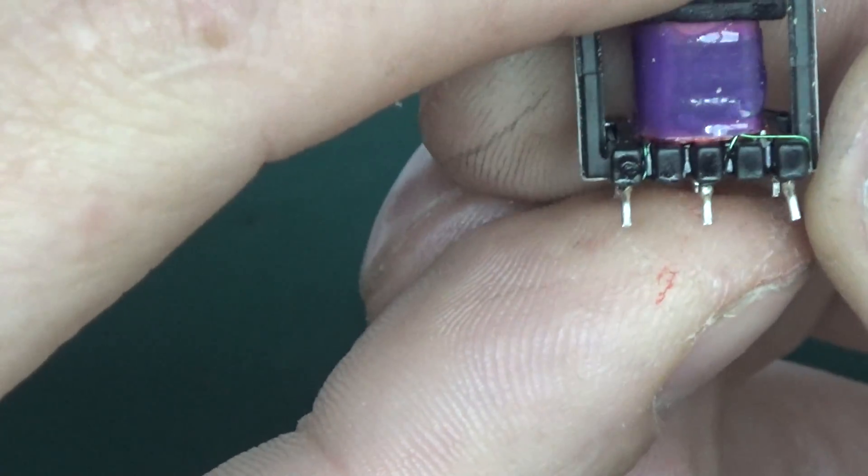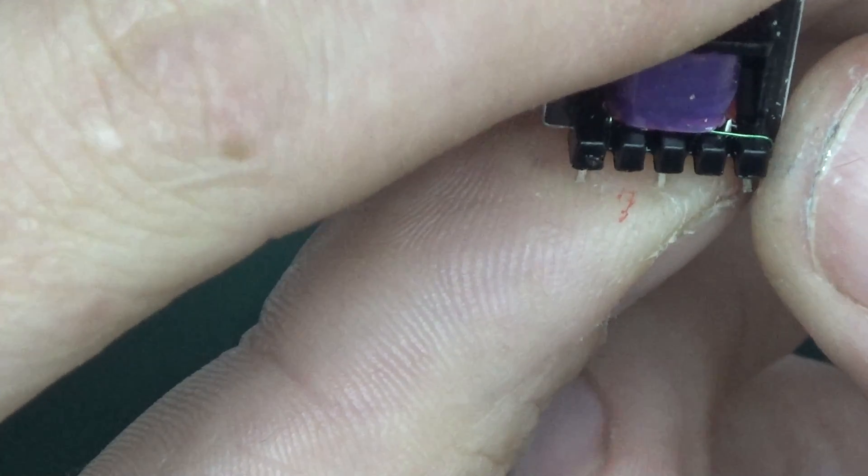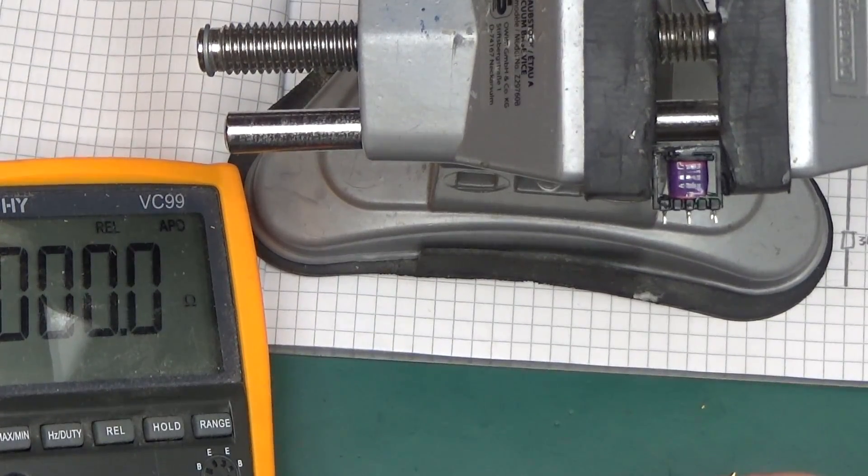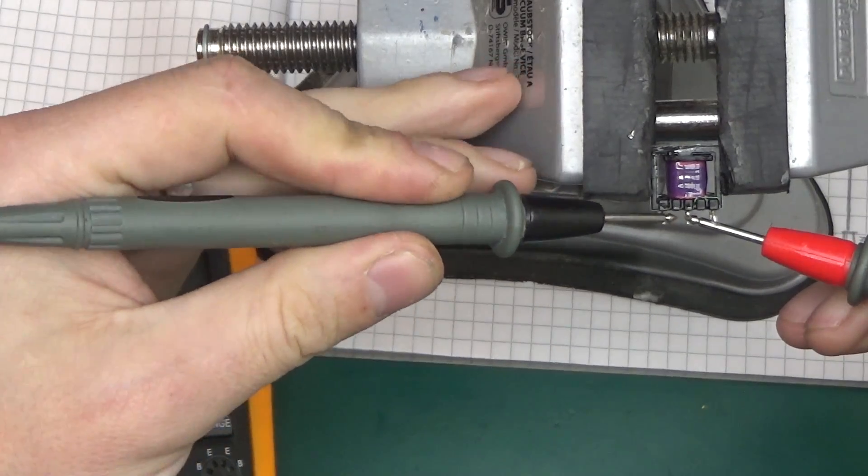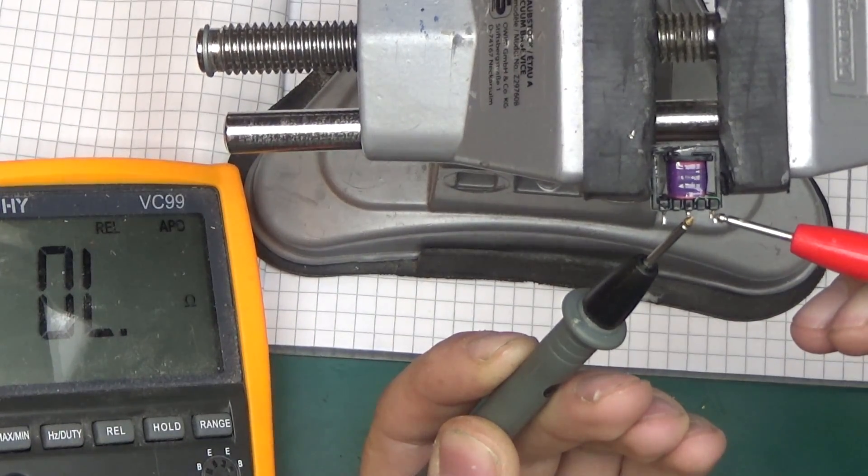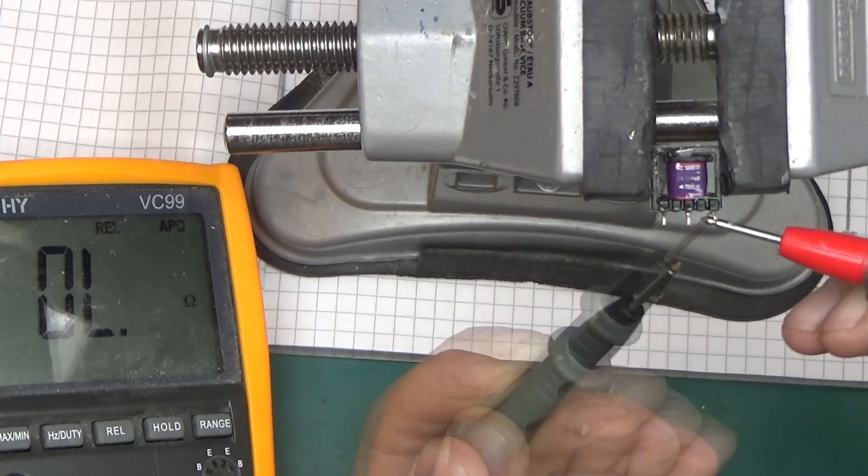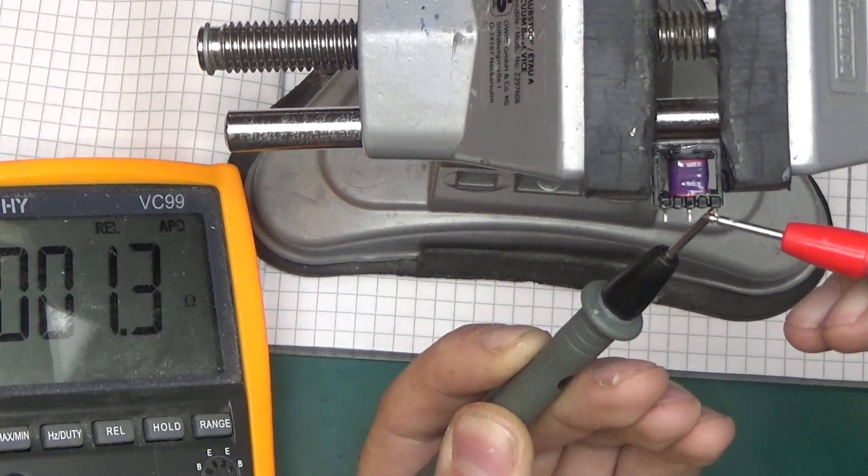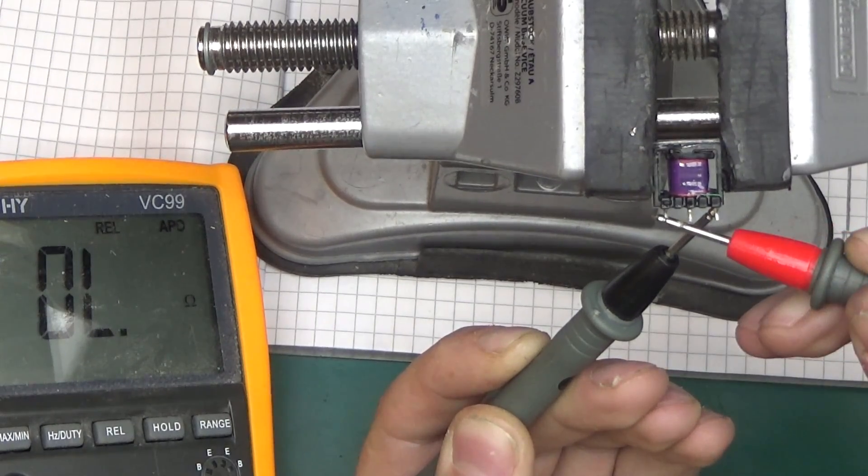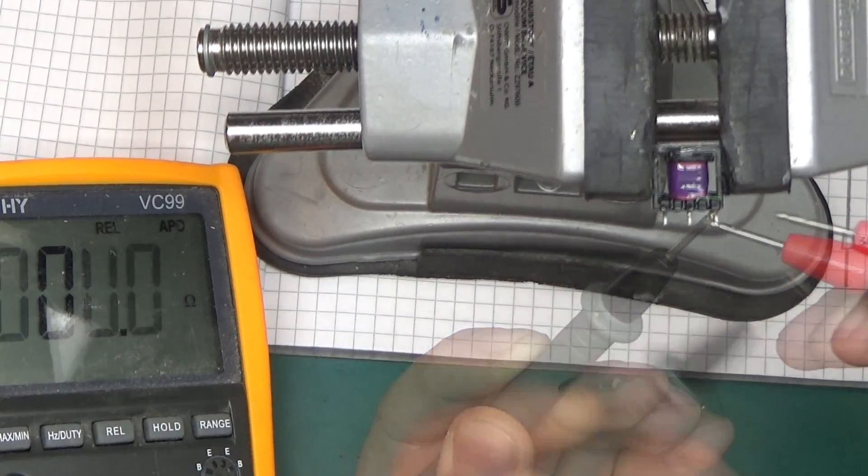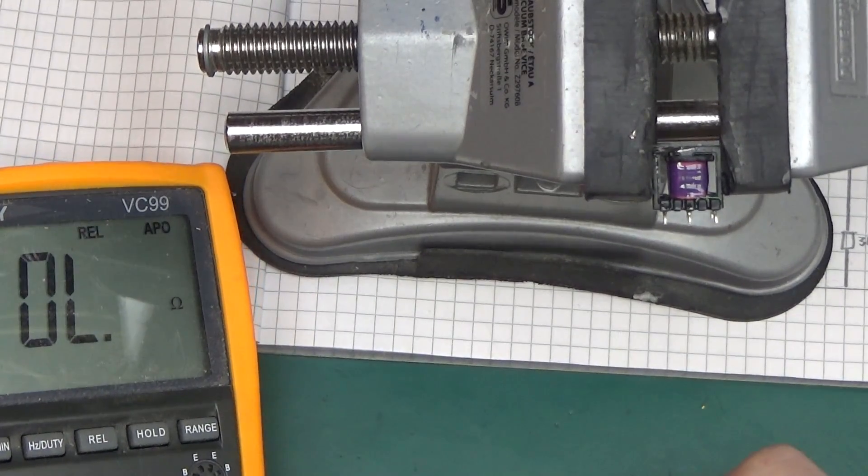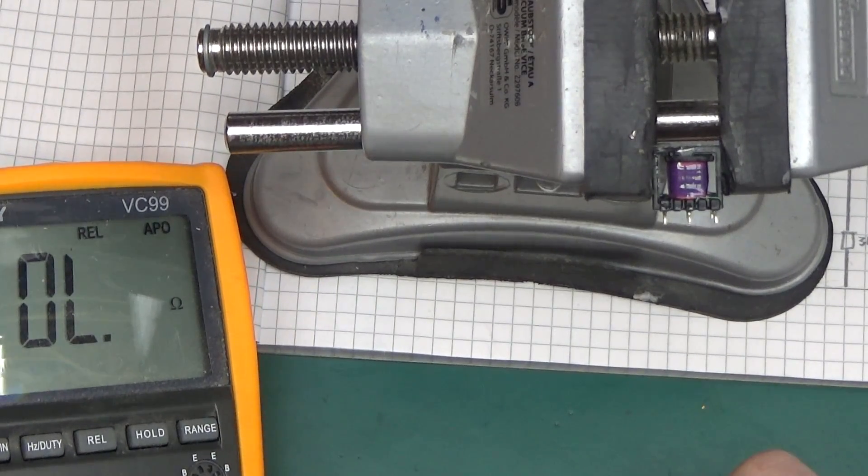Zero out the probes. The first two, 0.6 of an ohm, then the middle one to this one is not connected, and this one and this one is 0.5, 0.6 of an ohm. So those are two separate windings.